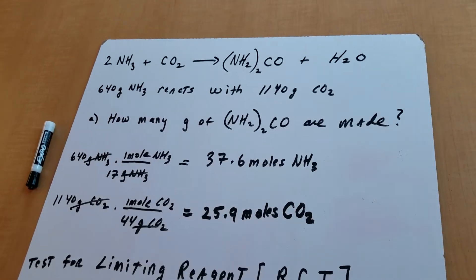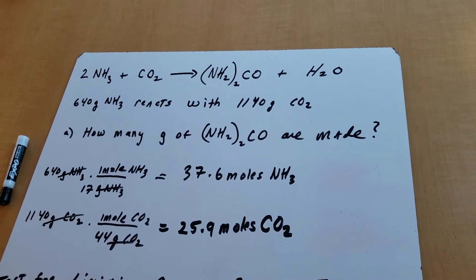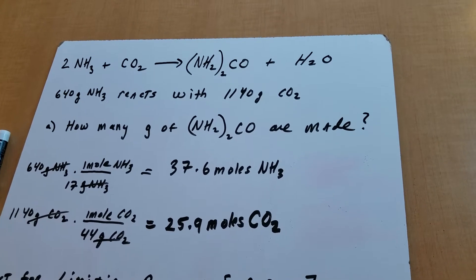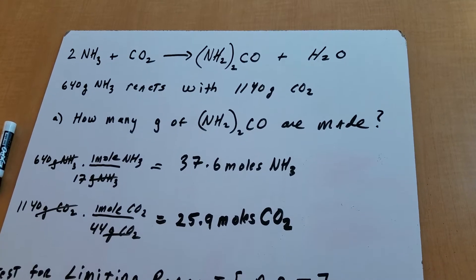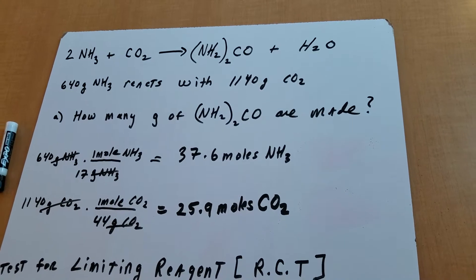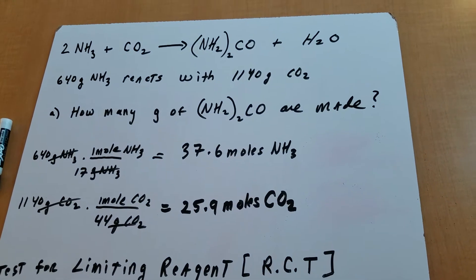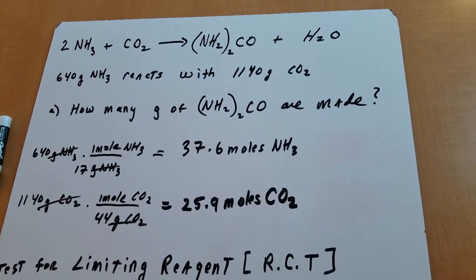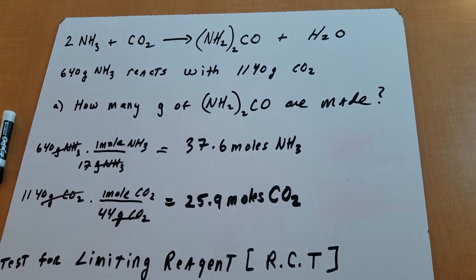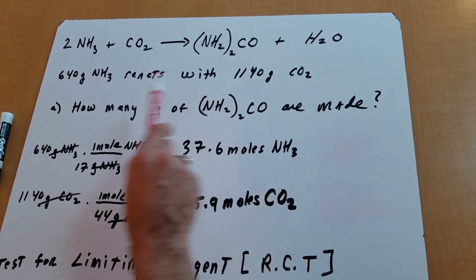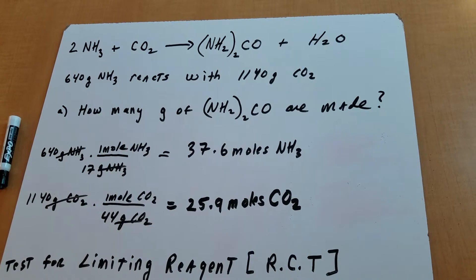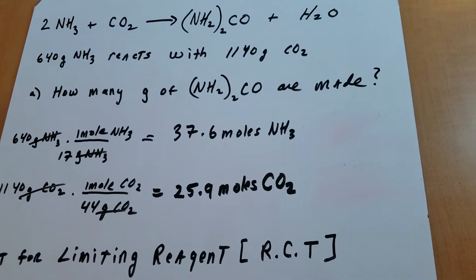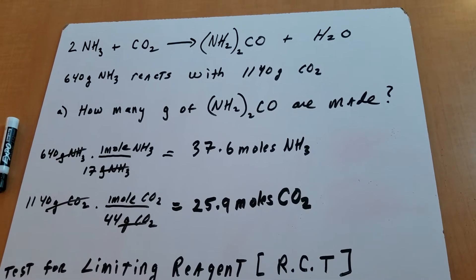This is a difficult problem, so it's worth practicing. I'm going to give you a problem — don't worry about the numbers not being so nice. I did this with a calculator, but on the DAT exam and in the Destroyer, the numbers will be much easier to work with. The important thing is to understand the technique. In this example, I give you a balanced equation: two moles of ammonia reacting with CO2 to give urea and water, with 640 grams of ammonia and 1140 grams of CO2. Whenever you're given grams of two reactants, that sets the stage for a limiting reagent calculation.